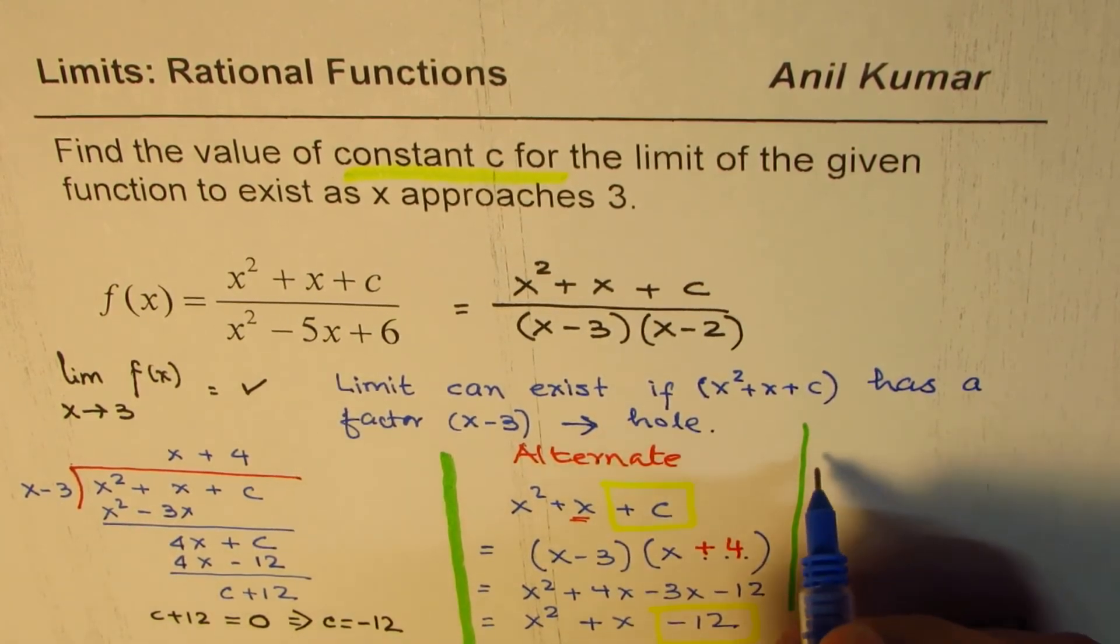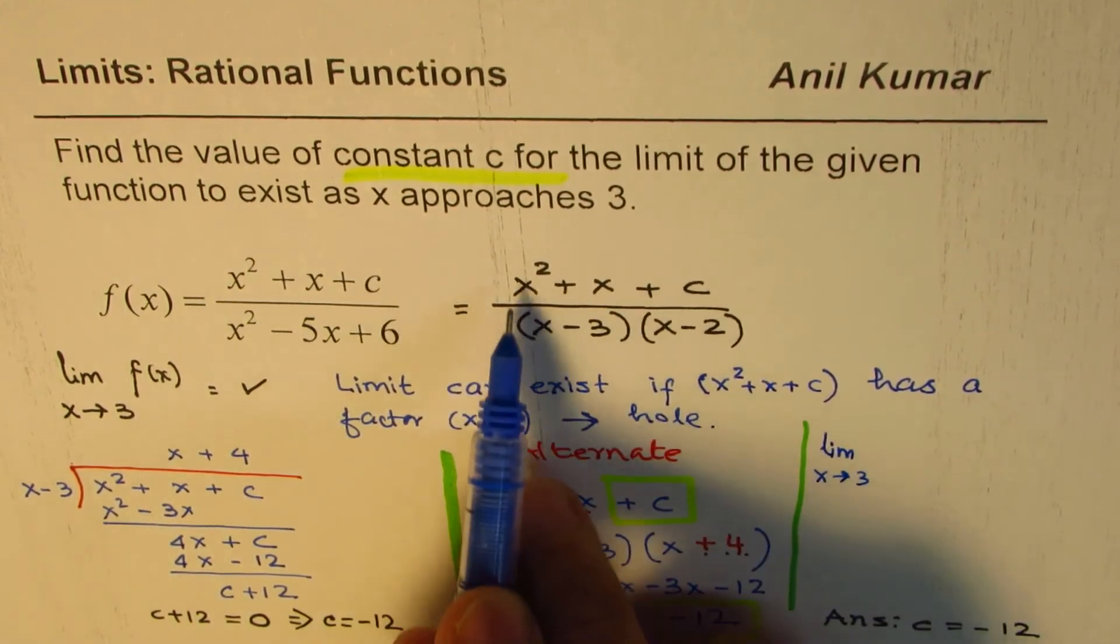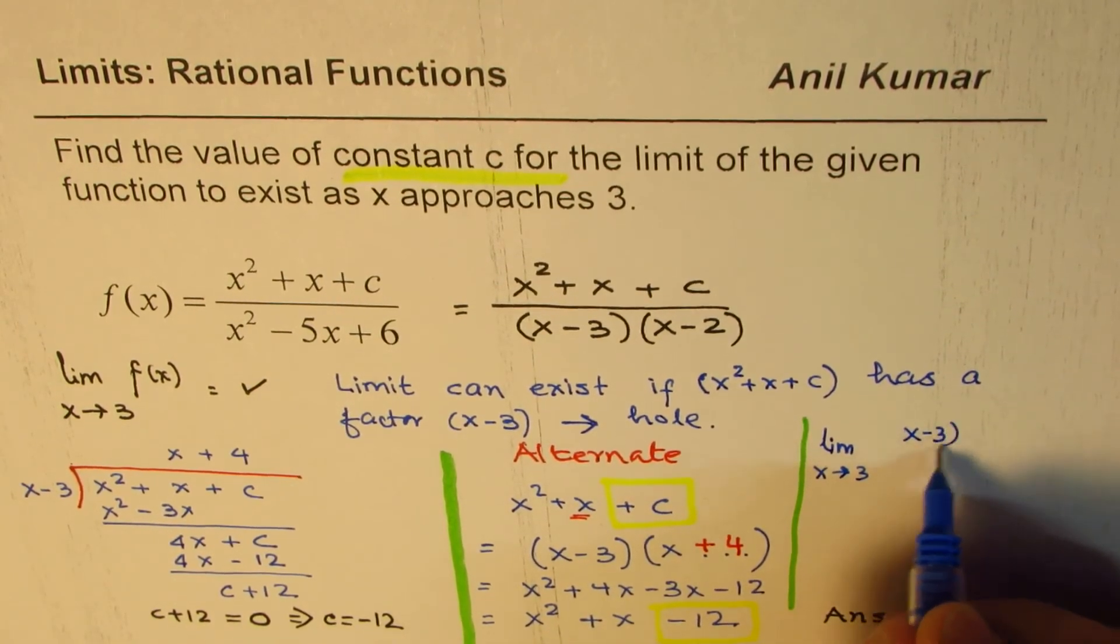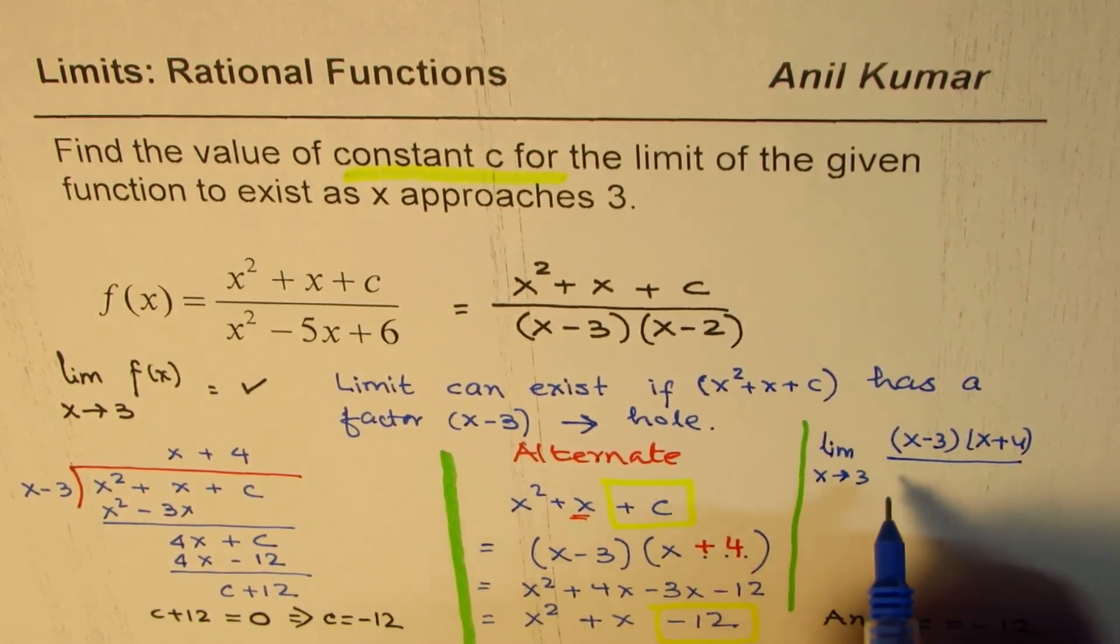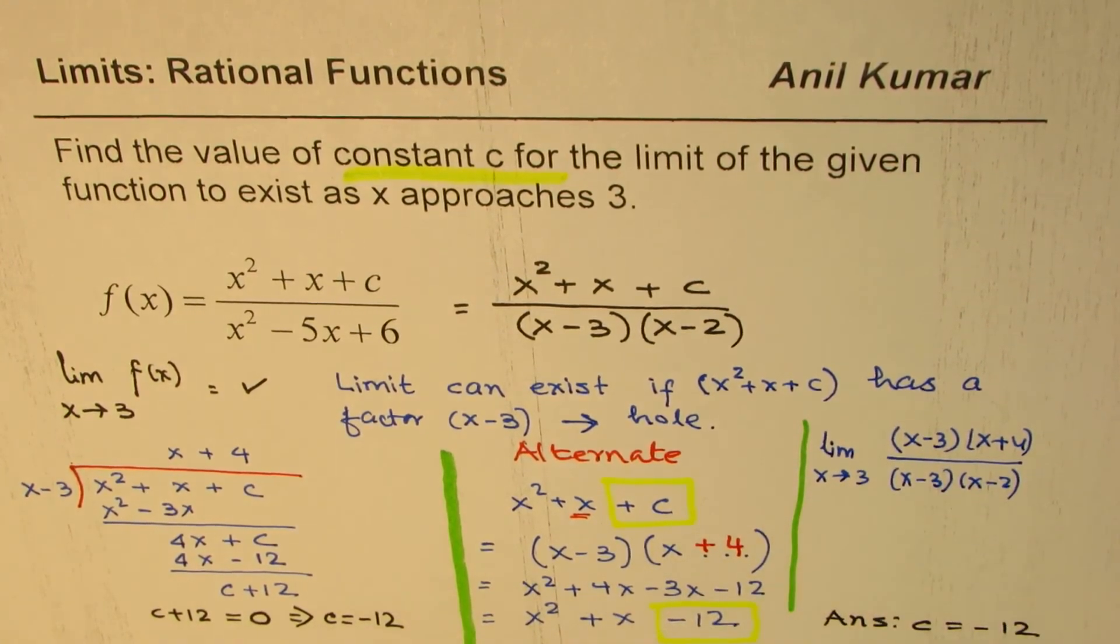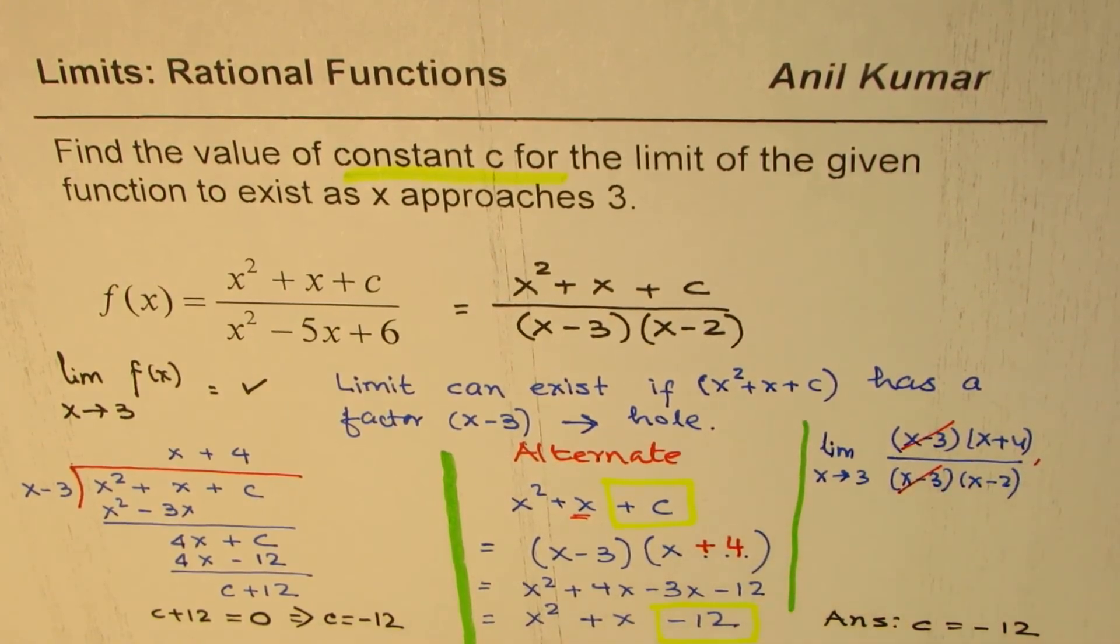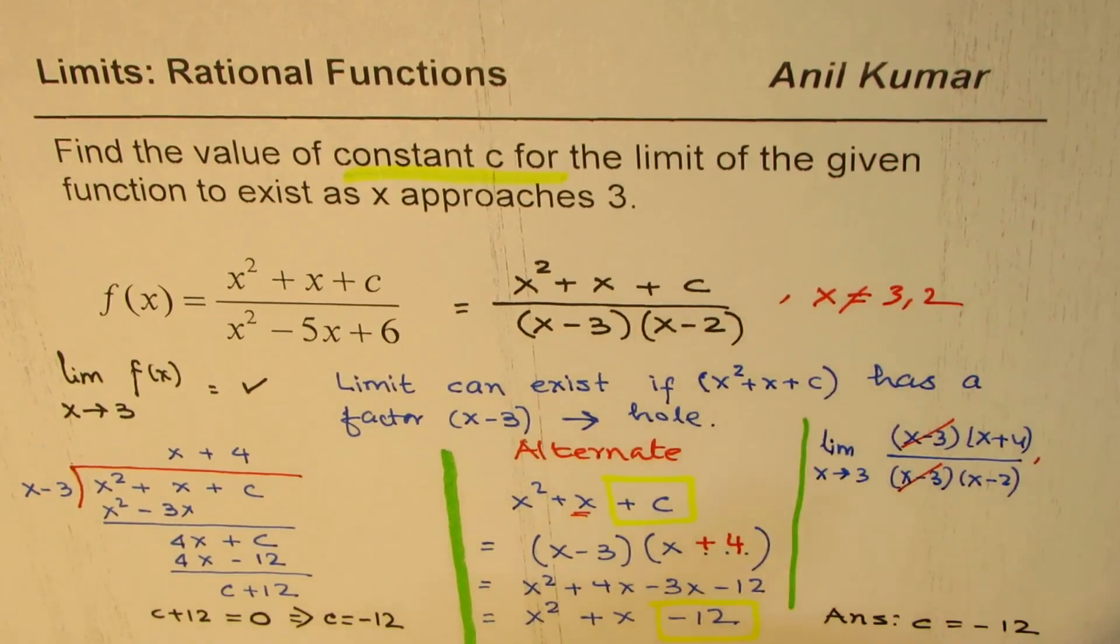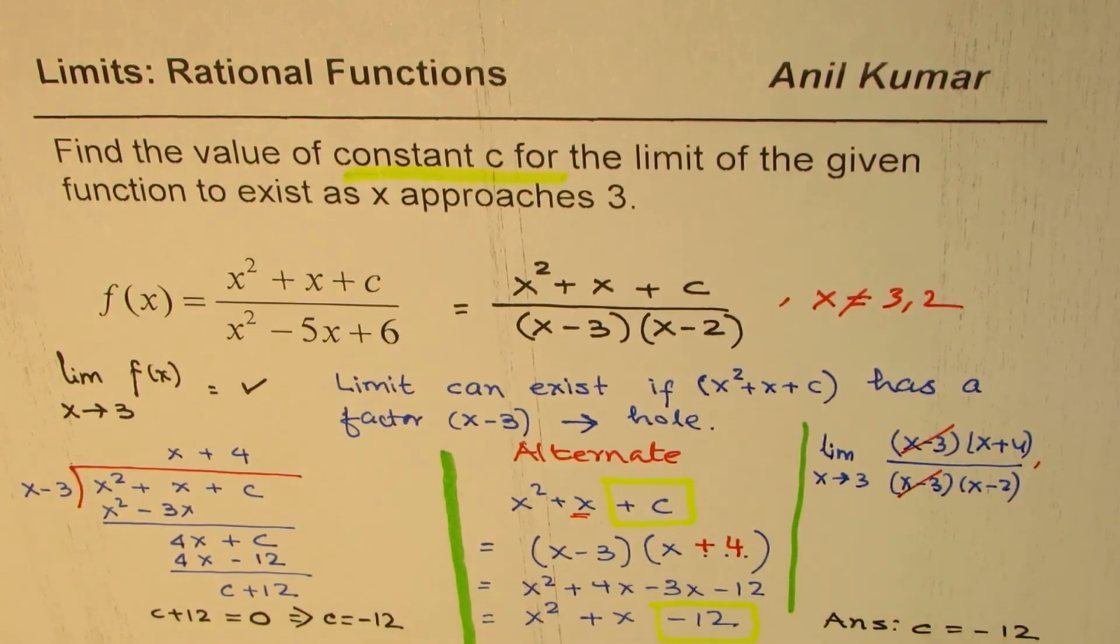So now we could write this as limit when x approaches 3. Now we could write this numerator as product of these two, which is x minus 3 times x plus 4, divided by x minus 3 times x minus 2. Since we ensured that we have a common factor, well, in this case, let me write here, x is not equal to 3 or 2. So now we could write down what the limit is.